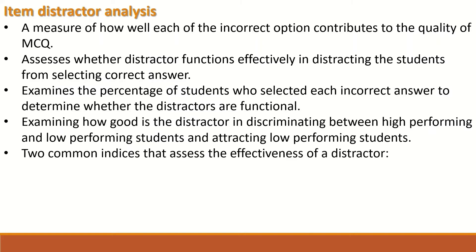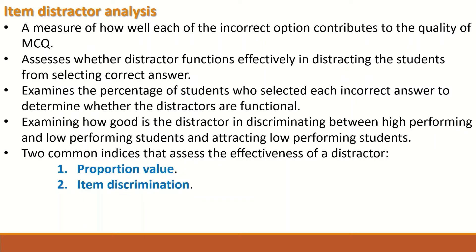The two most frequently used indices that assess the effectiveness of a distractor are: the proportion value or percentage value, which is similar to the difficulty value; and the item discrimination, used to determine whether the distractor can discriminate between high performing and low performing students, with the analysis based on Kelly's equation method.